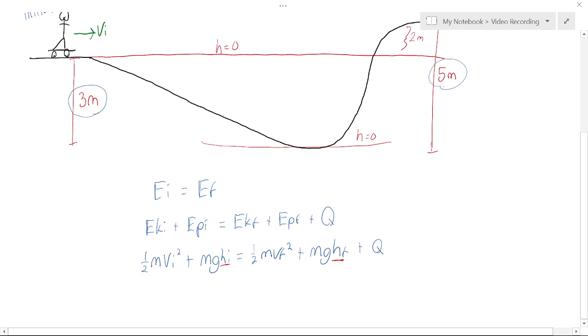So instead of saying three and five, we could say zero. So we can set this to be zero, and then this one will be two. Three to five is the same as zero to two.